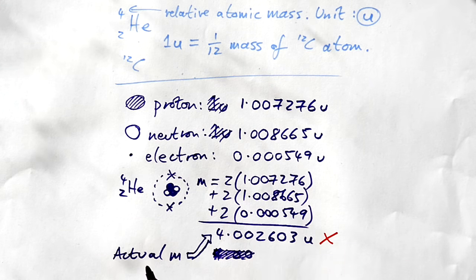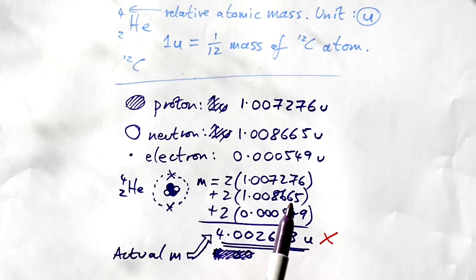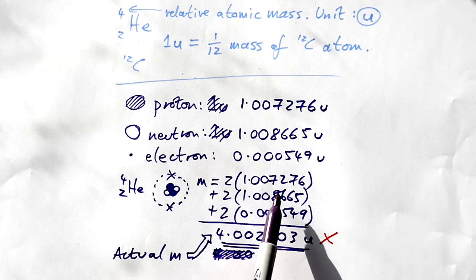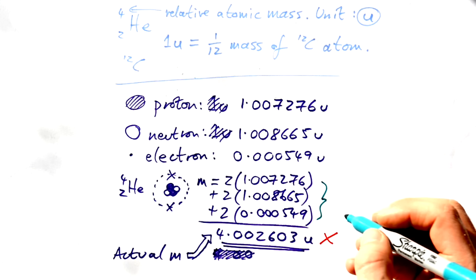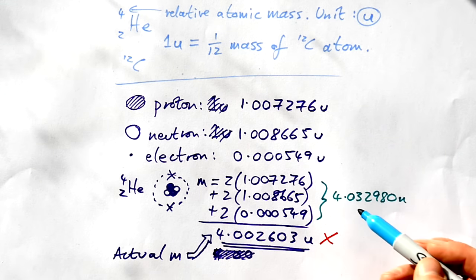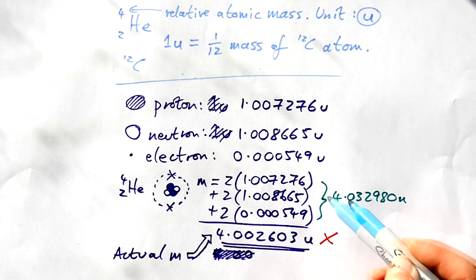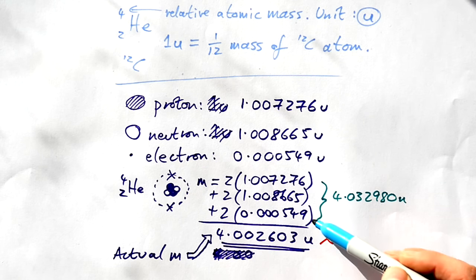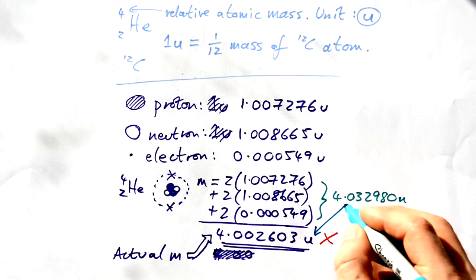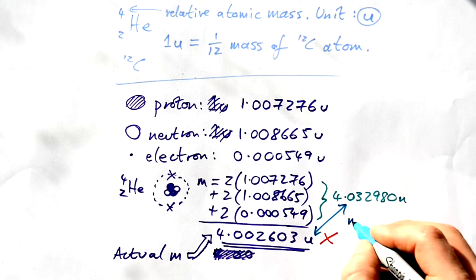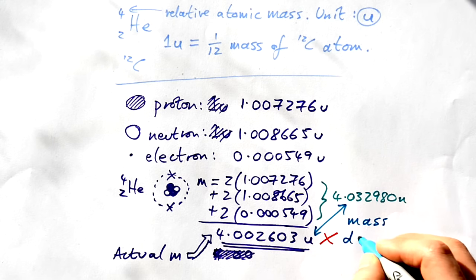Now when we measure the mass of a helium atom we find it to be this number here. What's weird is that the separate masses of the protons, neutrons and electrons don't add up to this measured mass. They actually add up to slightly more. That means that there is a difference in the calculated mass of a helium atom from its constituents, protons, neutrons and electrons, and its actual measured mass. We have what we call a mass defect.